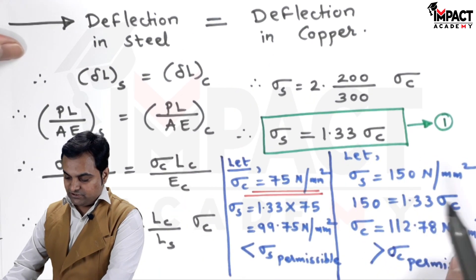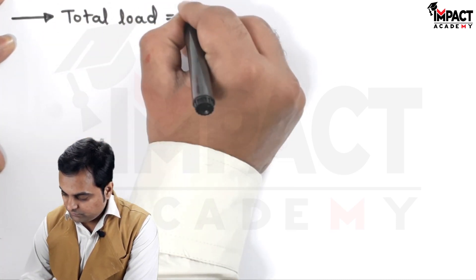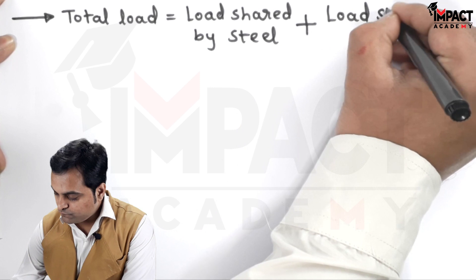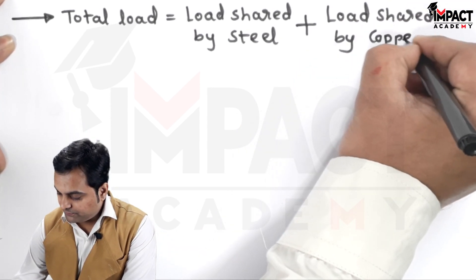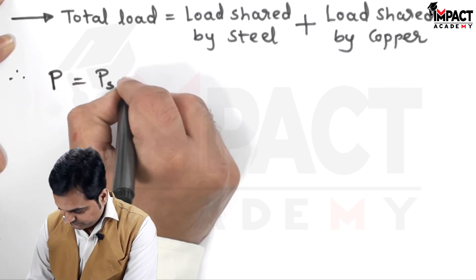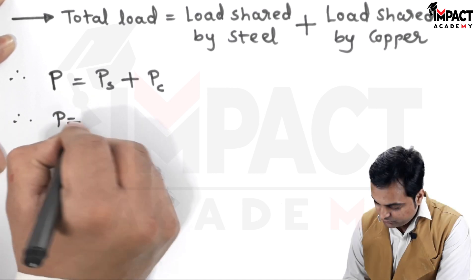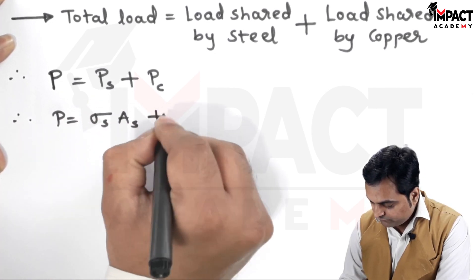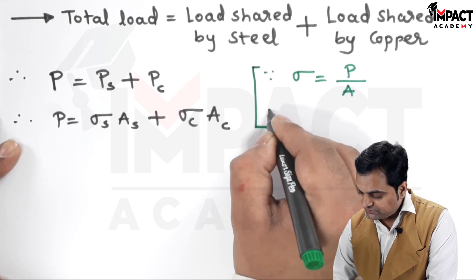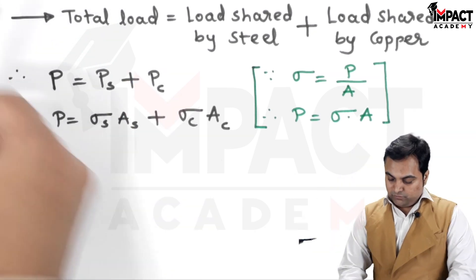The second condition is that the total load equals the load shared by steel plus the load shared by copper: P = P_s + P_c. Since load equals stress times area, we have P = σ_s × A_s + σ_c × A_c.